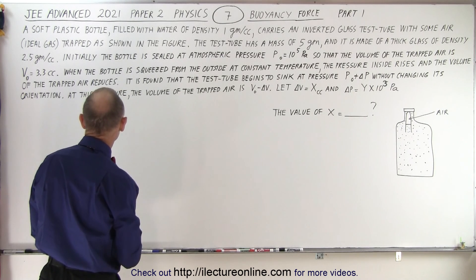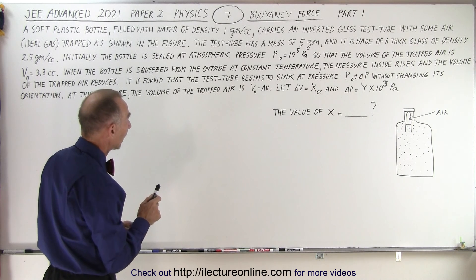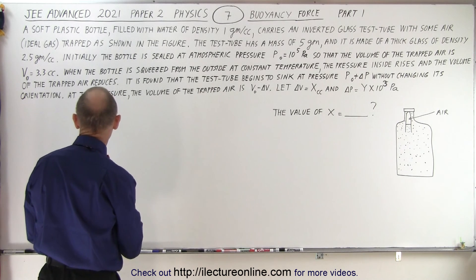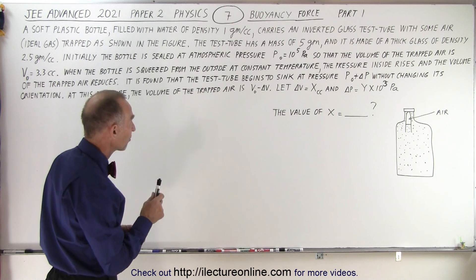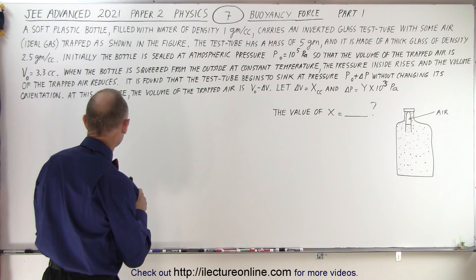The test tube has a mass of five grams and is made of thick glass of density 2.5 grams per cubic centimeter. Initially, the bottle is sealed at atmospheric pressure at 10 to the fifth Pascals so that the volume of the trapped air is 3.3 cubic centimeters. When the bottle is squeezed from the outside at constant temperature, the pressure inside rises and the volume of the trapped air reduces.